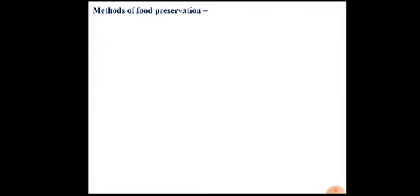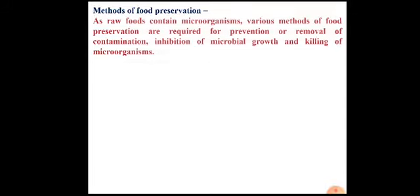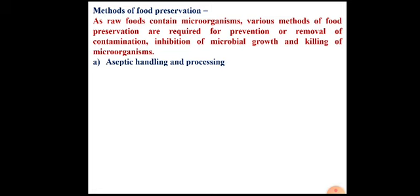To prevent spoilage of food, there are several methods of preservation. Food preservation includes prevention of contamination or killing or elimination of contaminants that may lead to spoilage. These methods cause removal of contamination, inhibition of microbial growth, and killing of microorganisms. The first is aseptic handling and processing — efforts should be made to minimize contamination during handling, so food should be handled under aseptic conditions, meaning an environment free from foreign microorganisms.